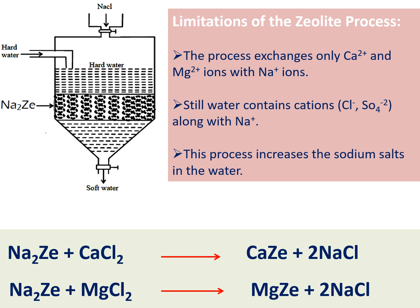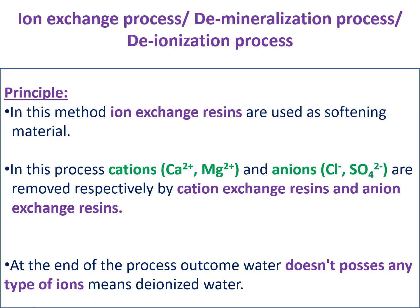Since anions still remain in the water, we have to go for another purification method. To avoid these problems, a more advanced method called the ion exchange process or demineralization process exists, also called the deionization process. The basic principle involves ion exchange resins, which are of two types: cation exchange resin and anion exchange resin.